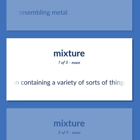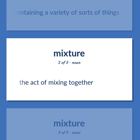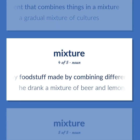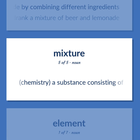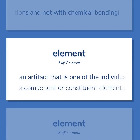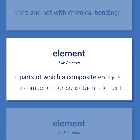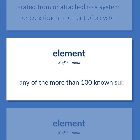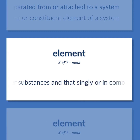Assortment: a collection containing a variety of sorts of things. Mixing: the act of mixing together. Blend: an event that combines things in a mixture; a gradual mixture of cultures. Concoction: any foodstuff made by combining different ingredients — 'he drank a mixture of beer and lemonade.' Mixture (chemistry): a substance consisting of two or more substances mixed together, not in fixed proportions and not with chemical bonding. Component: an artifact that is one of the individual parts of which a composite entity is made up, especially a part that can be separated from or attached to a system; also a constituent element of a system. Element: any of the more than 100 known substances, of which 92 occur naturally, that cannot be separated into simpler substances and that singly or in combination constitute all matter.